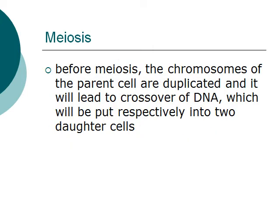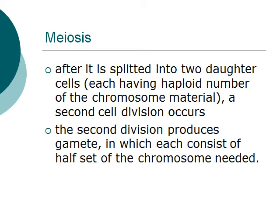Before meiosis, the chromosomes of the parent cell are duplicated, which will later lead to crossover of DNA, which will be put respectively into two daughter cells. After it is split into two daughter cells, each having a haploid number of chromosome material, a second cell division occurs.